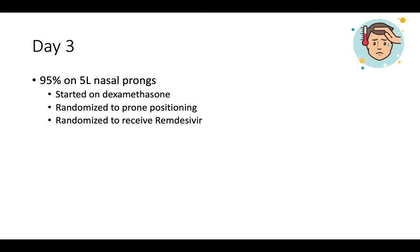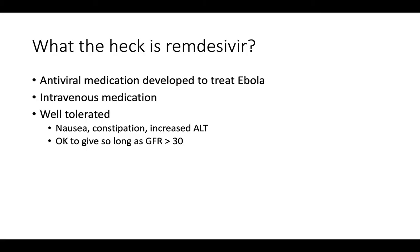The patient was also randomized to receive remdesivir. For any U.S. listeners wondering — yes, we are randomizing patients to that, because I'm not convinced it necessarily saves lives. Remdesivir is an antiviral medication developed to treat Ebola; it's intravenous and generally well tolerated. Regarding renal function: if GFR is above 30, it's fine to give — and probably even at lower GFRs, but call your pharmacist if GFR is below 30 to confirm.